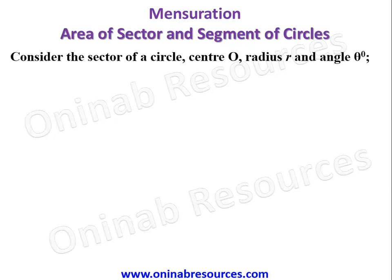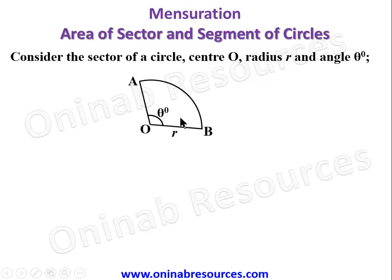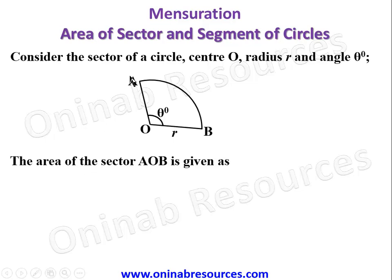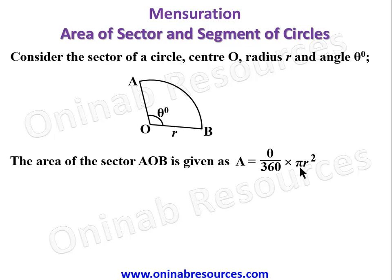Consider the sector of a circle, center O, radius r, and angle theta degrees. From the topic, we are interested in calculating the area of the sector and segment of circles. The area of sector AOB is given as A = (theta/360) × π r². This sector is just a fraction of a circle, so the fraction is represented by theta over 360, and since the area of a circle is πr², we multiply by that to get the area of the sector.